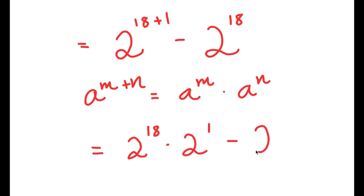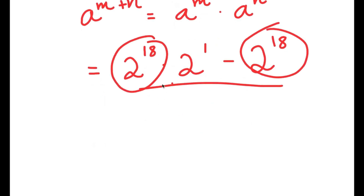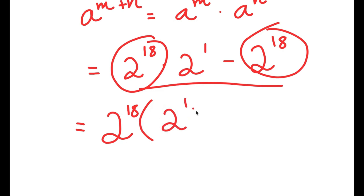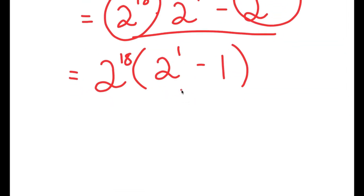And now I have this minus 2 to the power of 18. Because I have two terms that are the same, I can factor out 2 to the power of 18. So I get 2 to the power of 18 times — well, 2 to the power of 18 times 2 to the power of 1 divided by 2 to the power of 18 is simply 2 to the power of 1. And negative 2 to the power of 18 divided by 2 to the power of 18 is negative 1. So I get 2 to the power of 18 times (2 to the power of 1 minus 1).